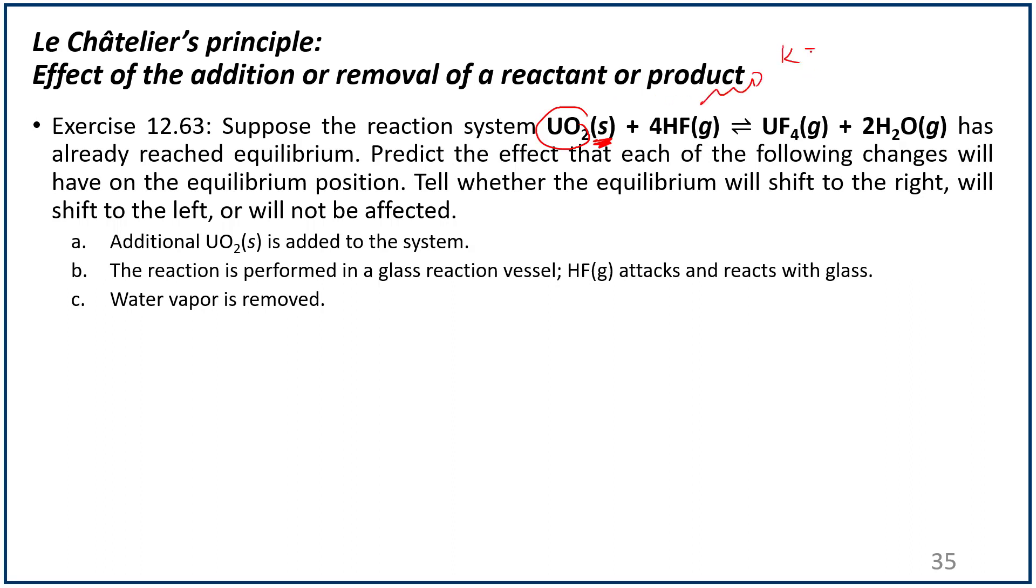In fact, the K here should actually be written as concentration of uranium tetrafluoride times water squared divided by HF to the fourth power. You do not actually see here in the expression for K the concentration for uranium dioxide. So this one, adding a solid to this system in equilibrium, has no effect, because we considered that solids and liquids have concentrations versus aqueous solutions and gases.